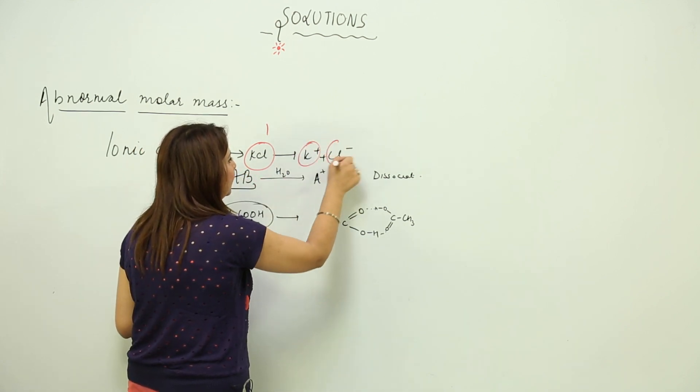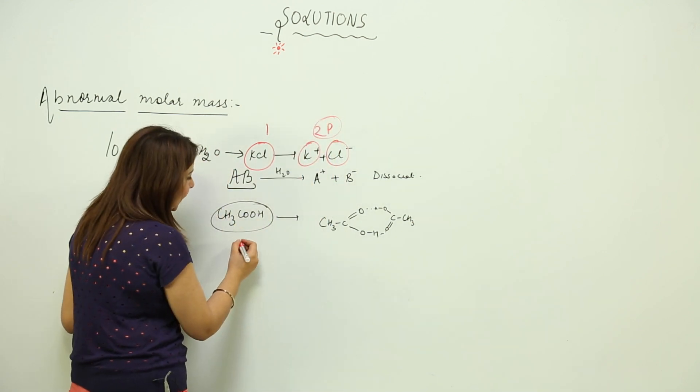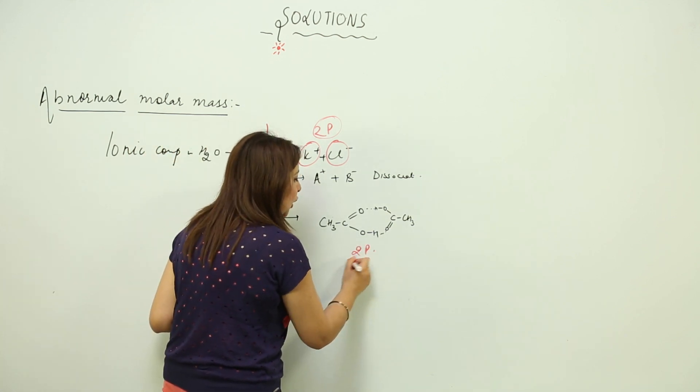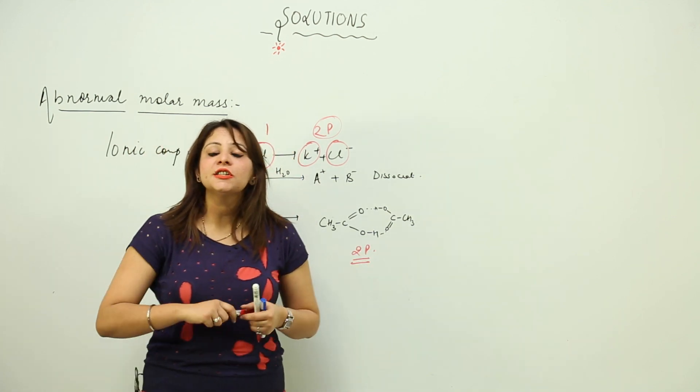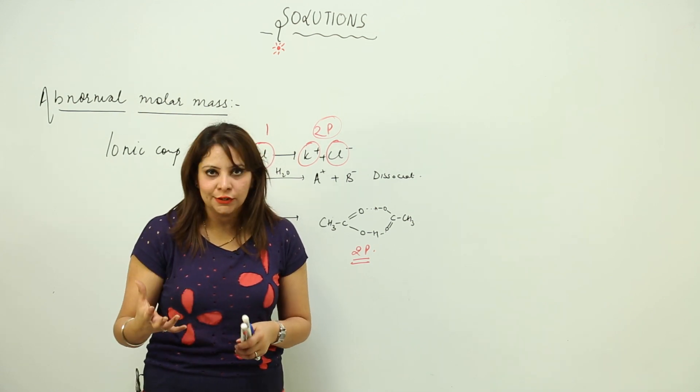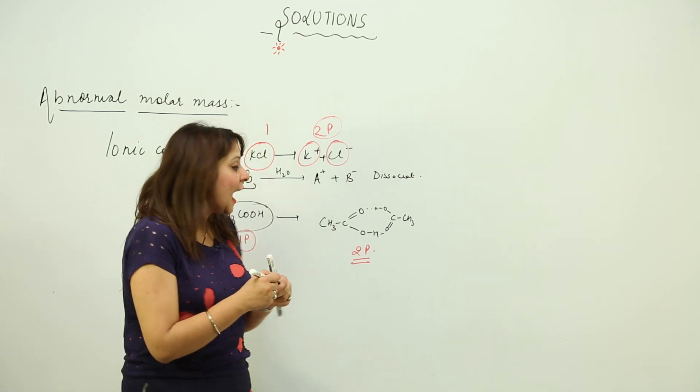Likewise here, the particle of ethanoic acid was one, but after mixing we get two particles as a result. So what happens when you are just mixing them, the number of particles are getting altered due to either association or due to dissociation.